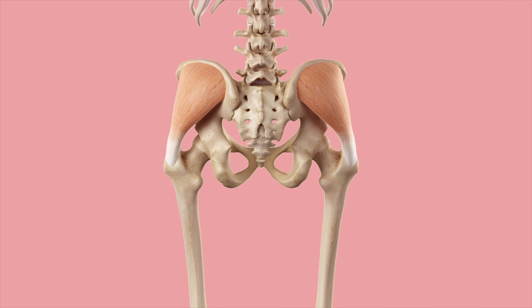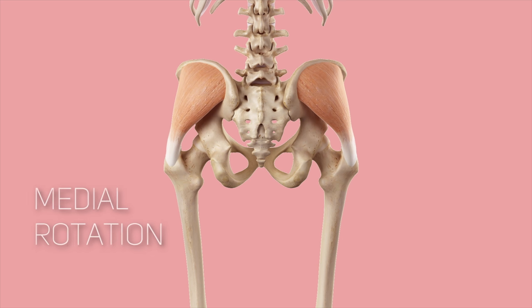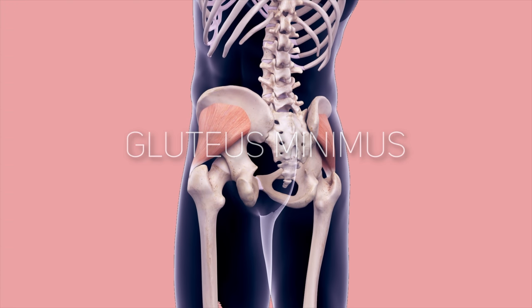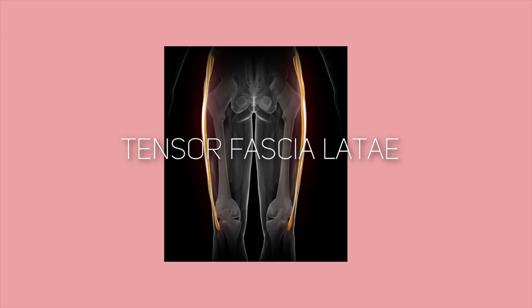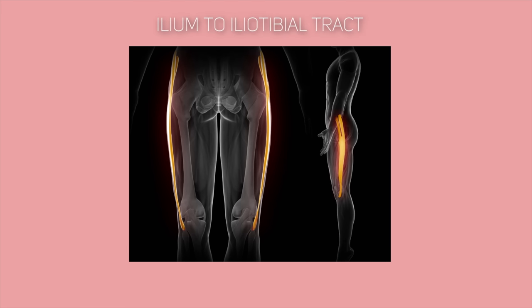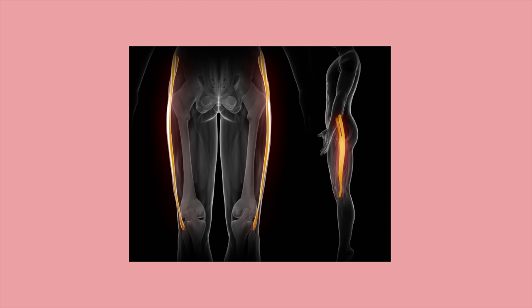The gluteus medius is involved in thigh abduction and medial rotation. The third is the gluteus minimus, which is also inferior and functions the same as the gluteus medius. Tensor fasciae latae is the last posterior muscle and links the ilium to the iliotibial tract all the way down to the leg bone tibia. The iliotibial tract is involved in medial rotation of the thigh and its flexion.